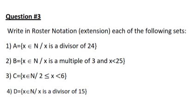Also on question number 3, we need to write the following sets in roster notation or in extension. The first one, they are telling us that X belongs to N. N means natural number. And X is a divisor of 24. So A could be 1, 2, 3, 4, 6, 8, 12, and 24. All of these are divisors for 24.